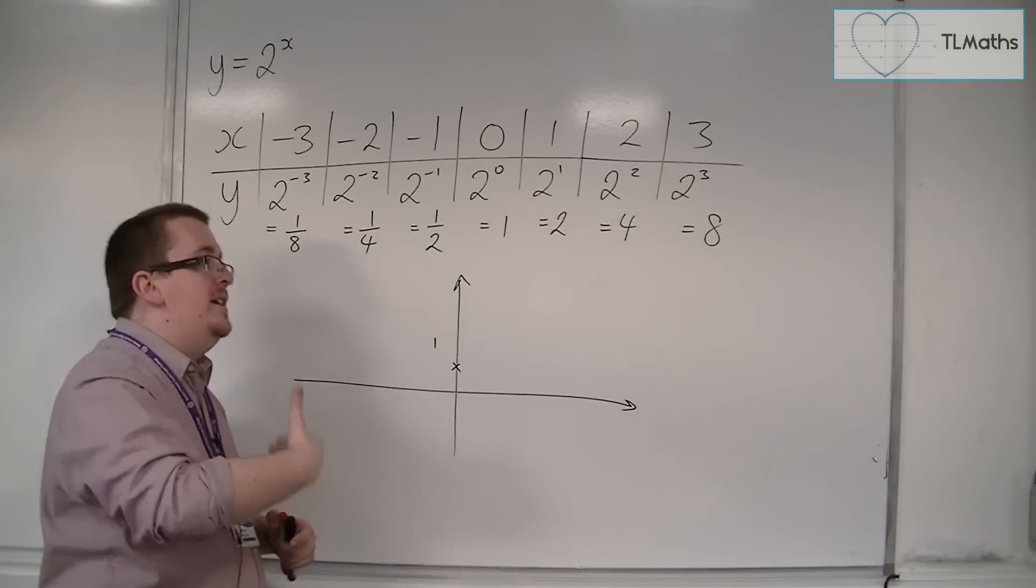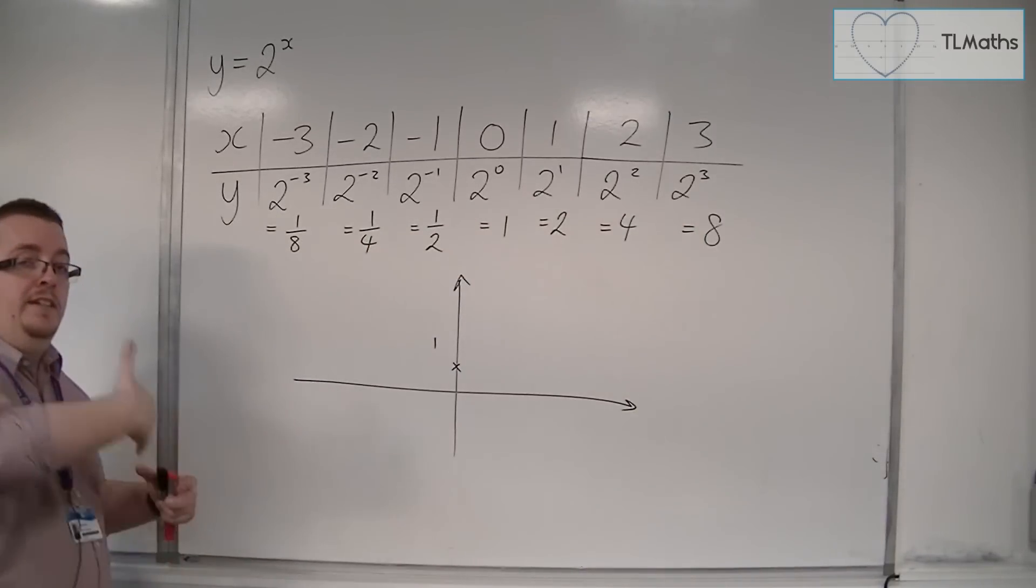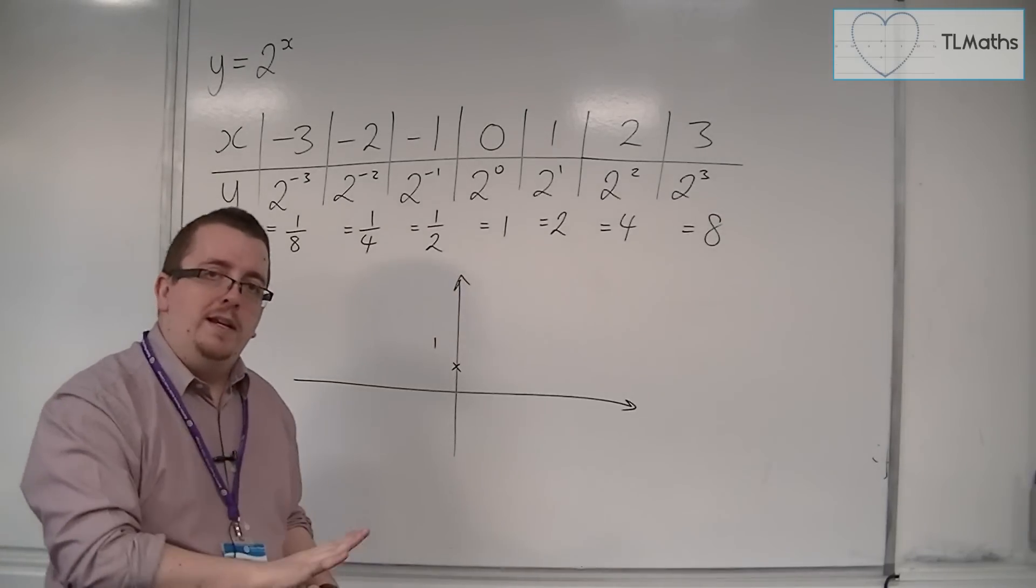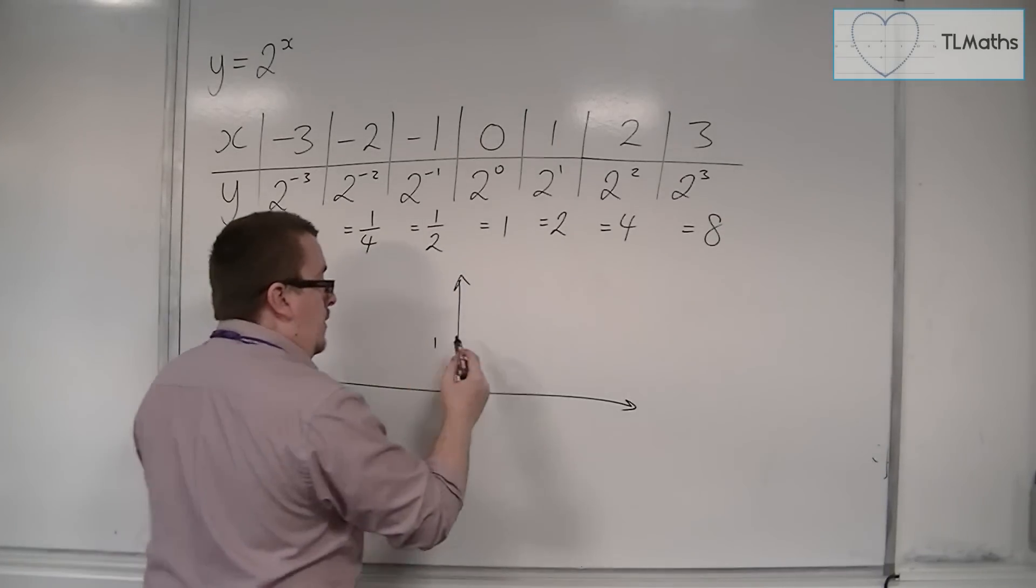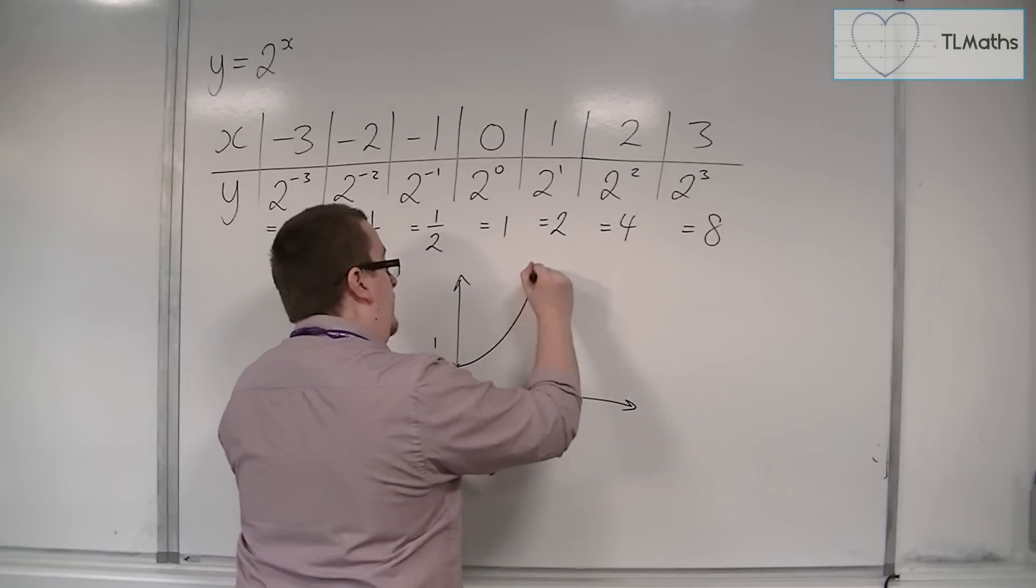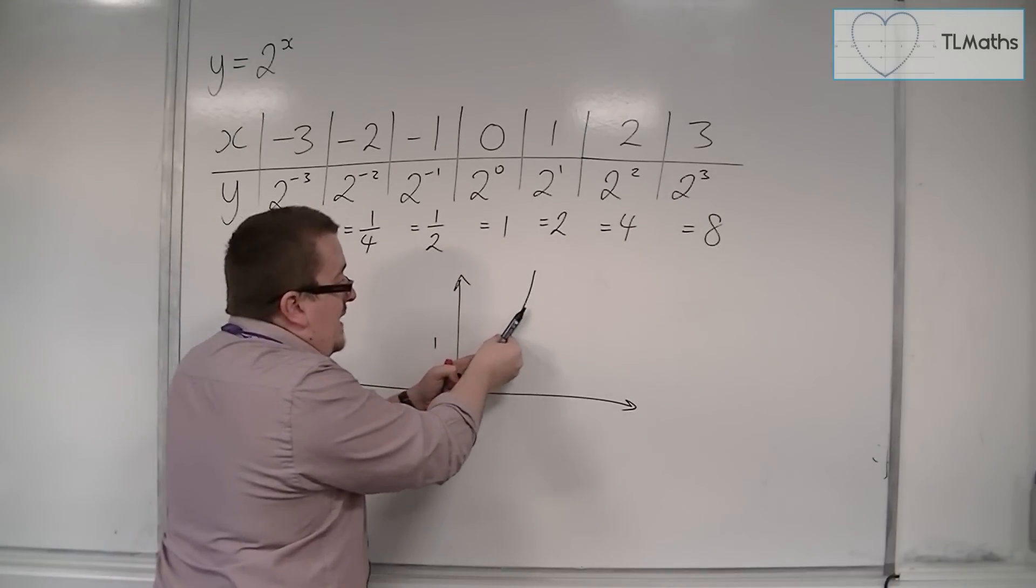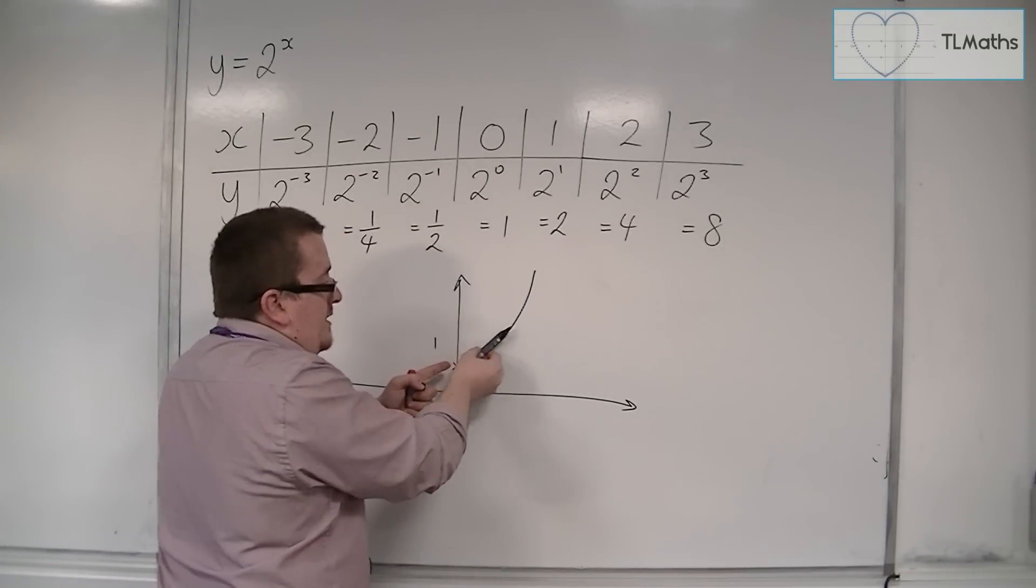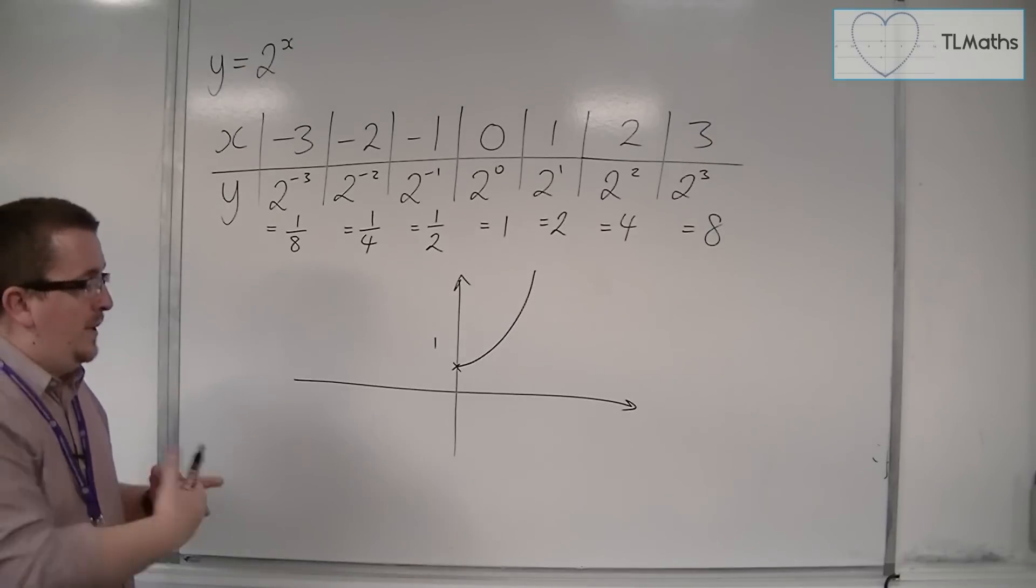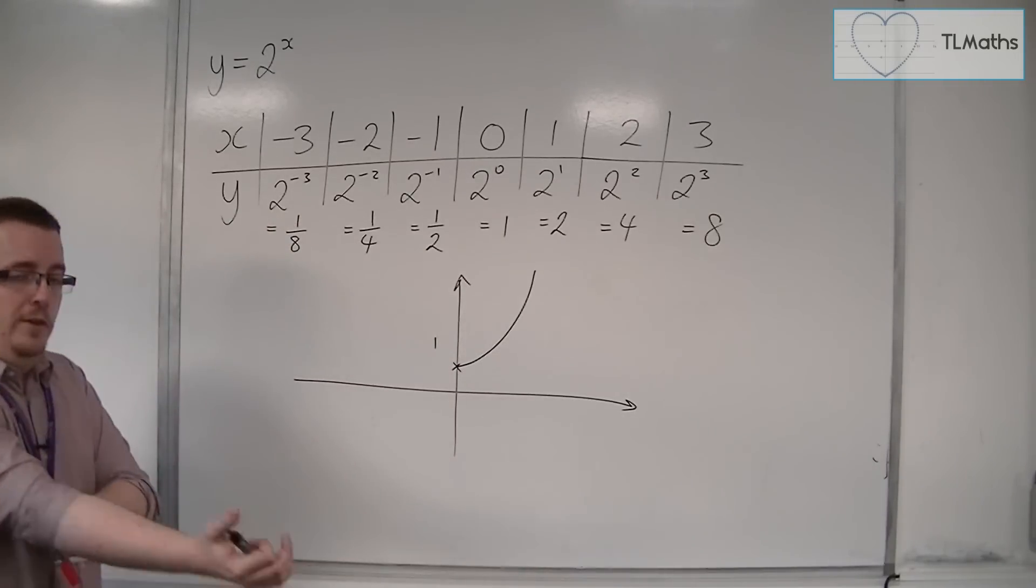Because y is doubling, we're going to get 16, 32, 64, 128, 256. You can see that the curve will get steep very quickly. To the right of the y-axis, the curve must increase in this fashion. The curve increases as x increases, so the gradient of the curve increases as x increases.